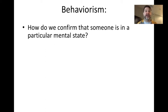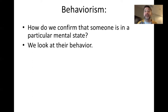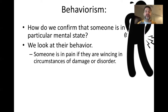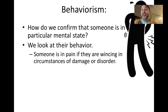Behaviorism asks us first to consider: how do we confirm that someone is in a particular mental state? How do you know your friend is sad? Or that your professor is angry? Well, this view says if we want to confirm that someone's in a particular mental state, we look at their behavior. We see what their expression is doing, their emotional responses such as crying, how they move their body. For example, if someone is in pain, we know they are wincing in circumstances of damage or disorder.